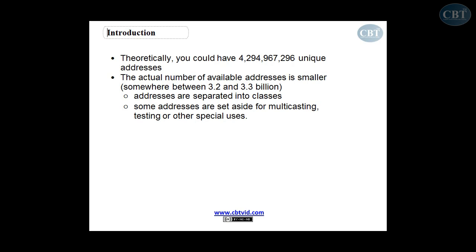This is where NAT comes into the picture. Network address translation allows a single device, such as a router, to act as an agent between the internet and a local network. This means that only a single unique IP address is required to represent the entire group of computers.